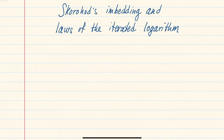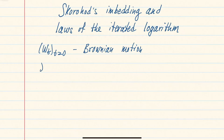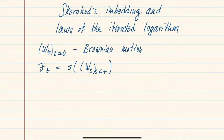Another application of this embedding will be given in the exercises, where we outline a different proof of Donsker's theorem about the convergence of the random walk under appropriate rescaling to the Brownian motion. Throughout this section, W_t denotes a Brownian motion, and F_t denotes the sigma-algebra generated by the Brownian motion up to time t. Whenever we mention a stopping time in this section, it is always with respect to this particular sigma-algebra.